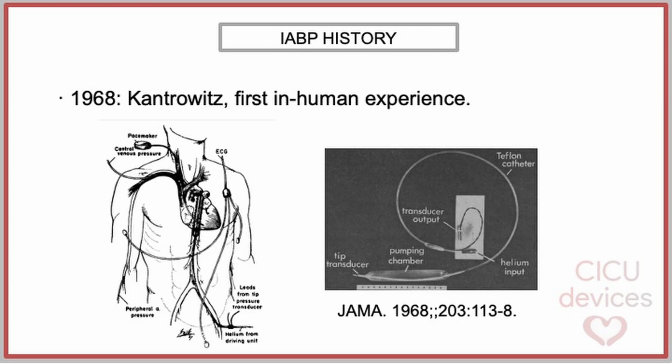In 1968, Cantrewitt presented the first clinical experience with the intra-aortic balloon pump. His system was inserted through an arteriotomy at the femoral artery, operated with helium, and synchronized with the heart via an electrocardiogram or a pressure transducer at the tip of the catheter. It was used in a very small group of patients with cardiogenic shock, yielding slightly positive results.